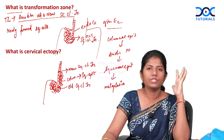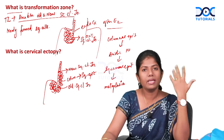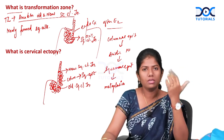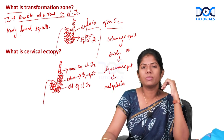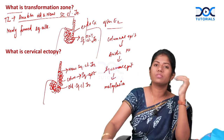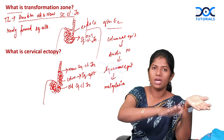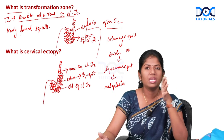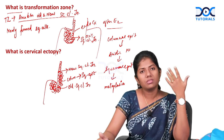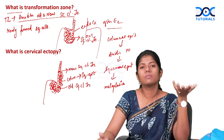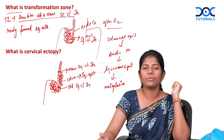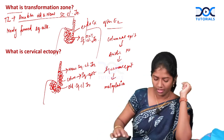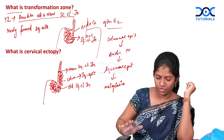Ectopy is the opposite of transformation zone. Transformation zone is where columnar becomes squamous; ectopy (cervical ectopy) is where squamous becomes columnar.